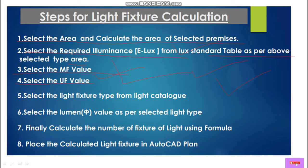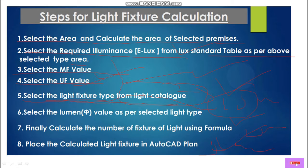Then select the UF — utilization factor value. Then select the light fixture type from a light catalogue. We have various brands of lights like Philips, Cisca, and many more. From these we can select the fixture type: either tube lights, downlights, or uplights. Then select the lumen value as per the selected light type.